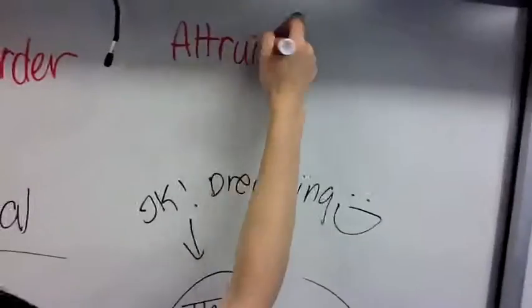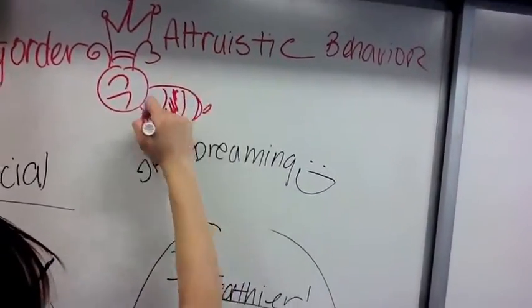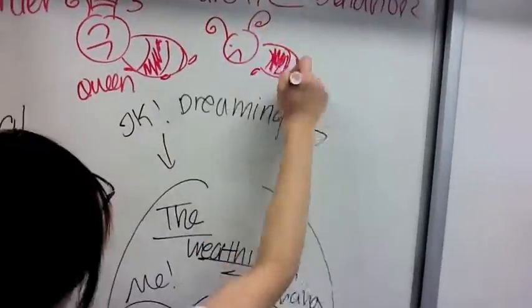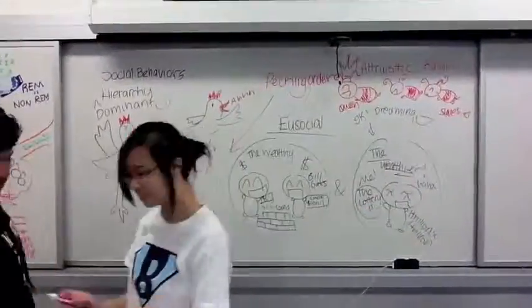Altruistic behaviors are unselfish behavior. An example is haplodiploidy. All hail the Queen. Thank you. Look at those birds, I mean bees.